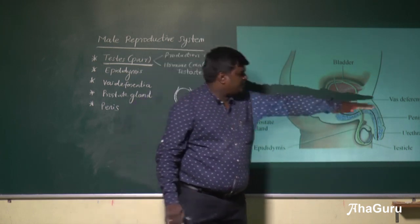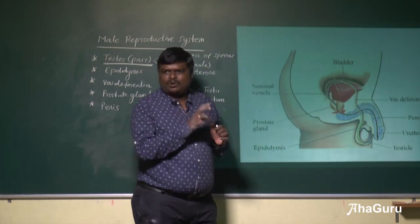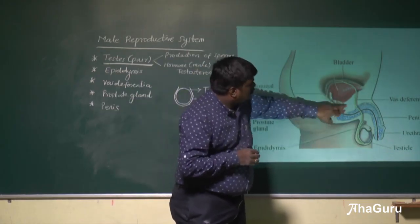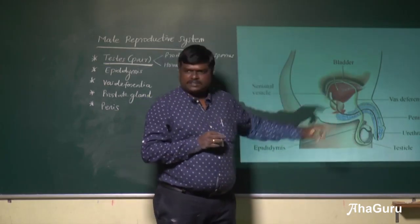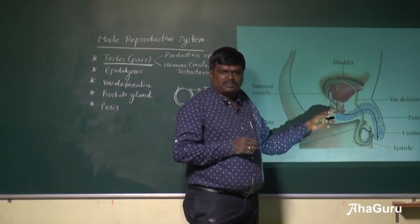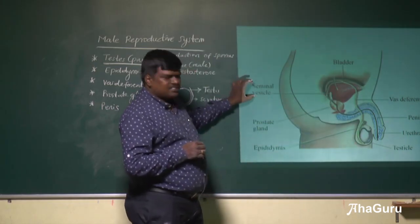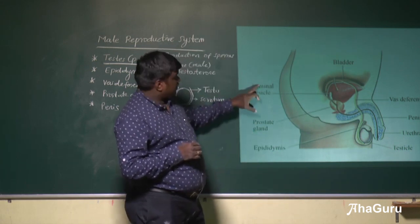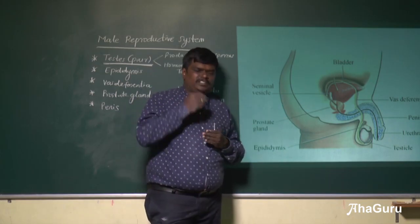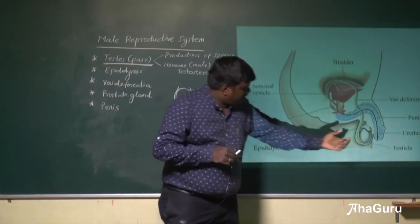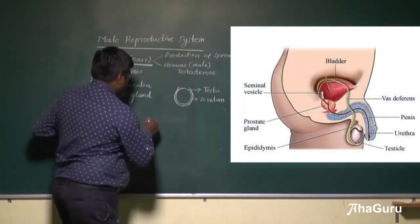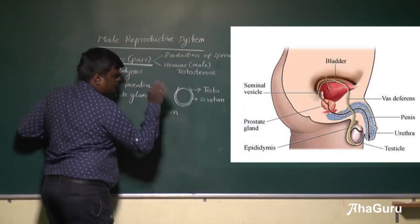The function of the vas deferentia is transportation. The testis produces sperms which are stored temporarily in the epididymis, and the vas deferens transports them from the epididymis to the penis. When the sperms arrive here, there is a seminal vesicle and prostate gland — these two are called accessory glands. These glands produce a nutritive material for the sperms, and even in the testis itself a nutritive fluid is present, called semen.